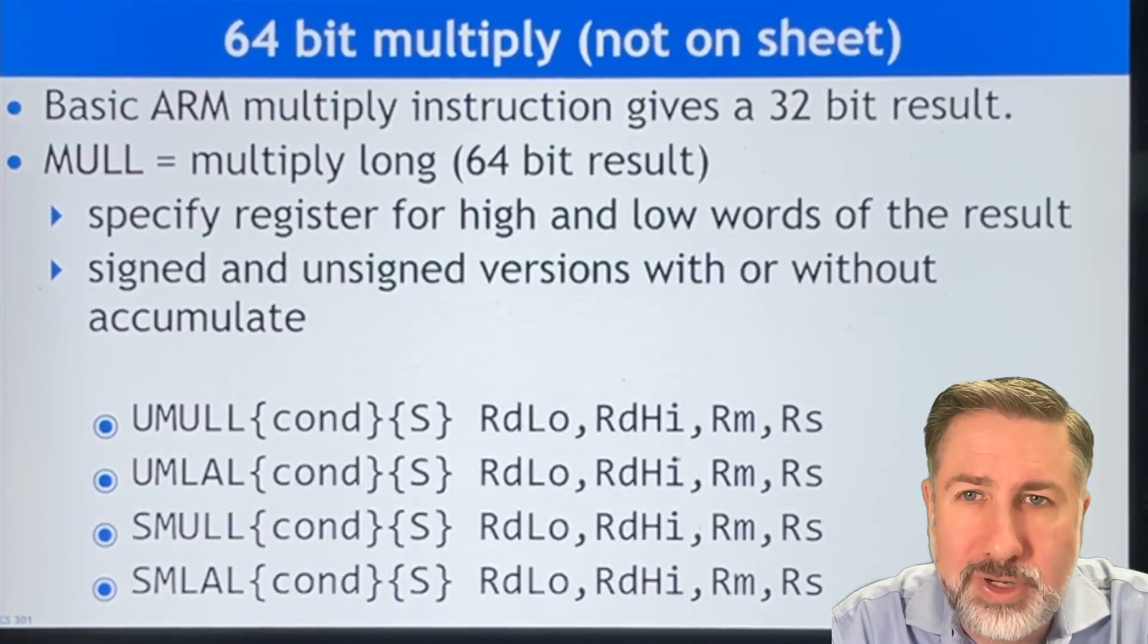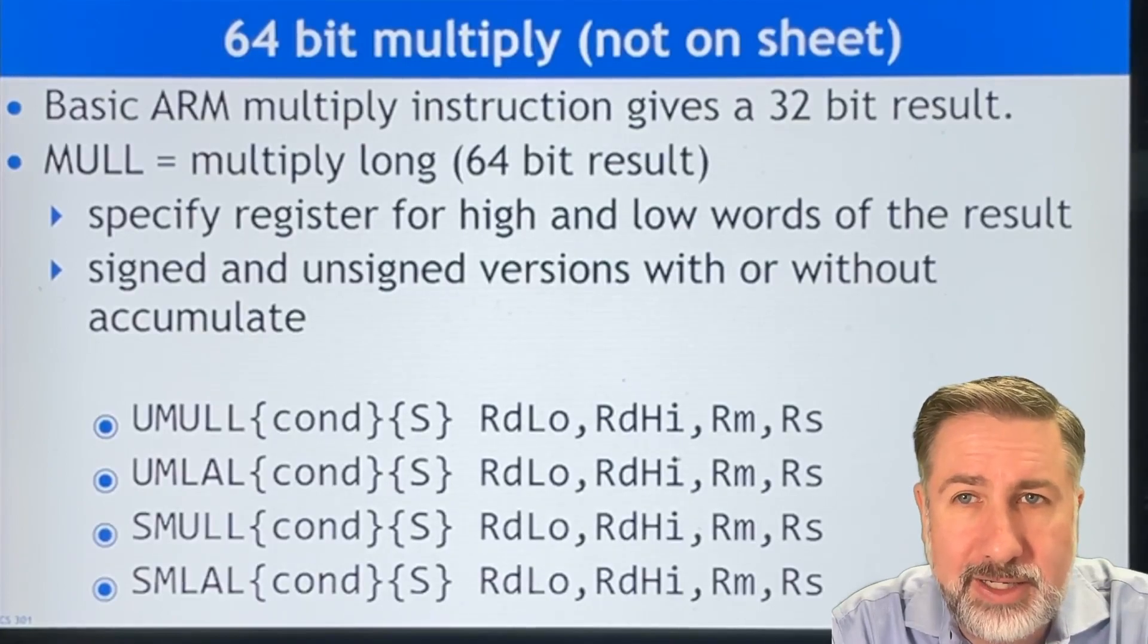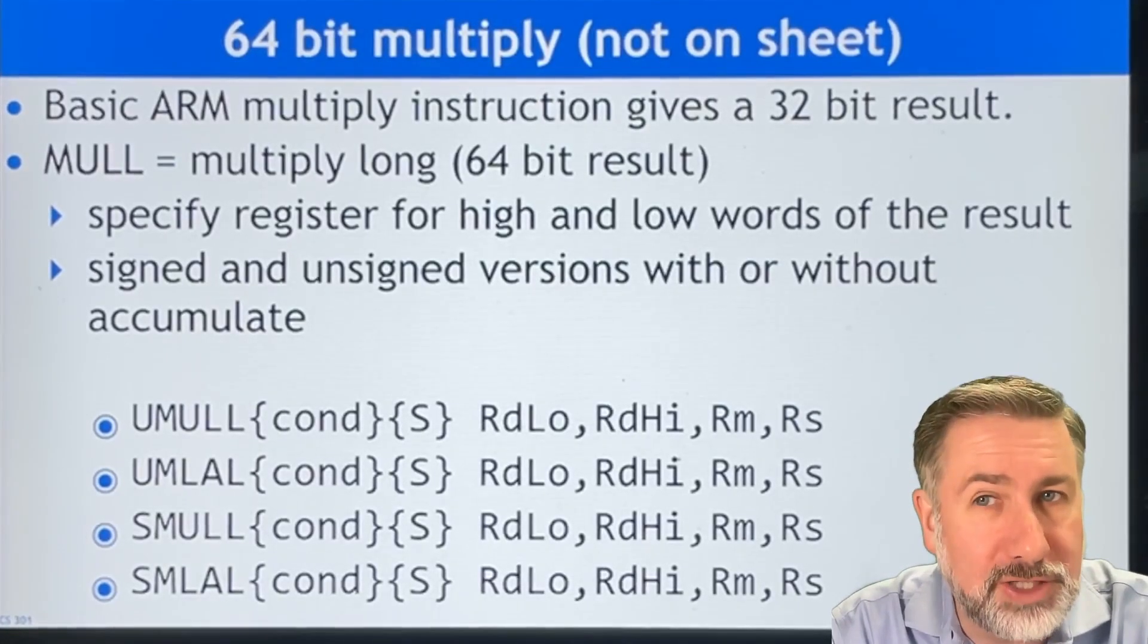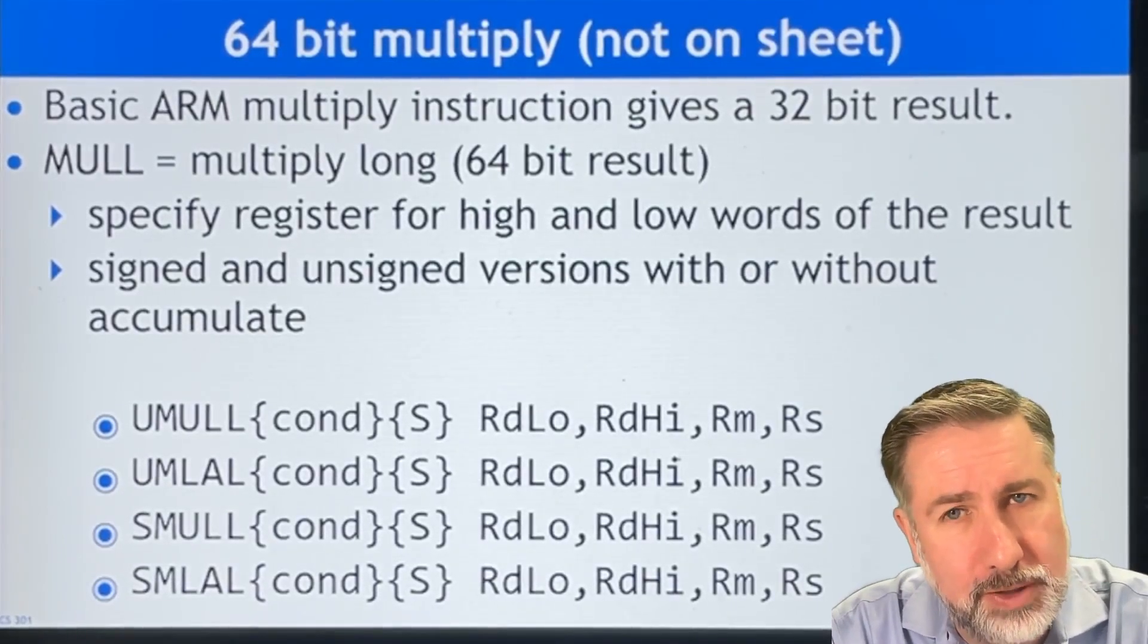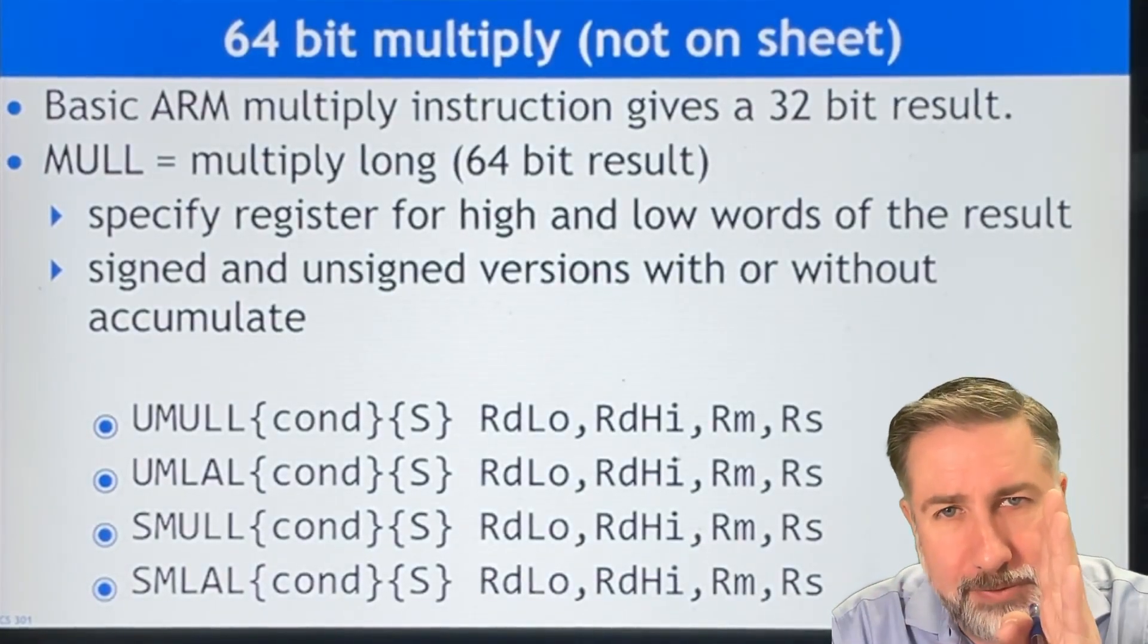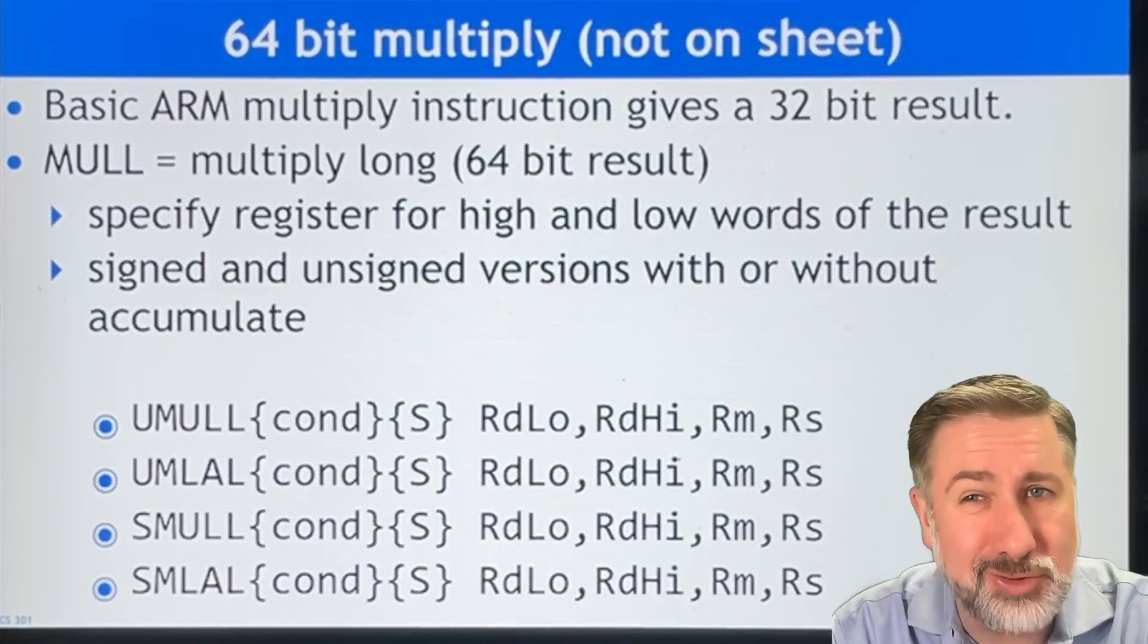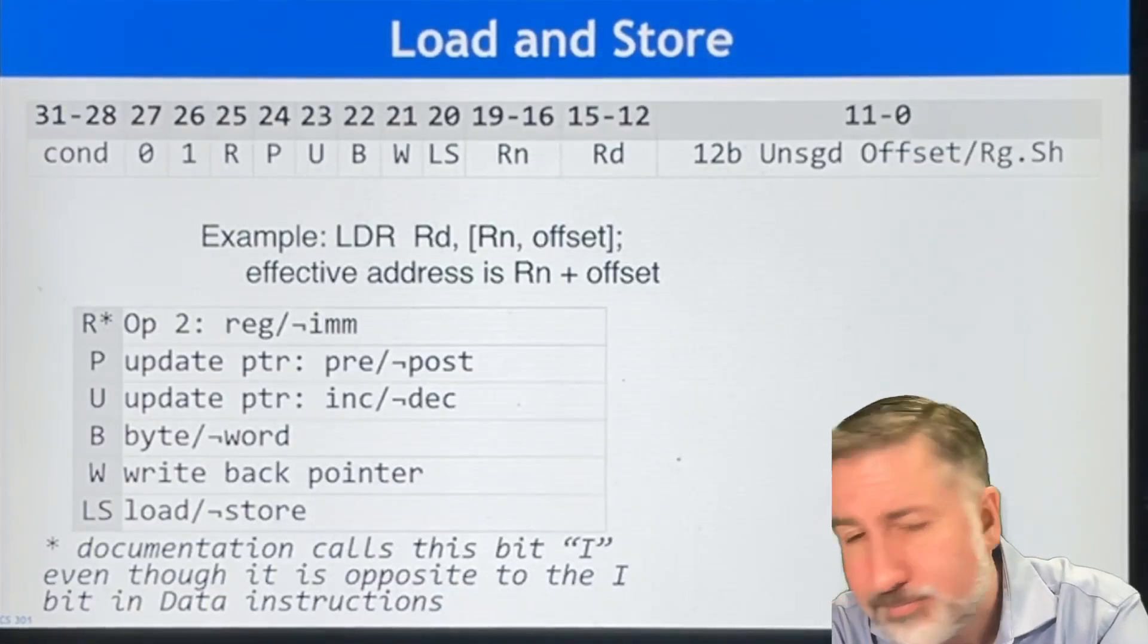And these are written as UMULL, UMLAL. So multiply long, right? Unsigned multiply long, signed multiply long, and signed multiply and accumulate long. So all of these are options. And again, I think it's unusual to use them. But what you do is the result goes into register D high and register D low. So you specify two destination registers and then a multiply register and a multiplicand and a multiplier. And those two get multiplied together as unsigned or signed. And so all these options, they exist, but I would encourage you to maybe not use them.